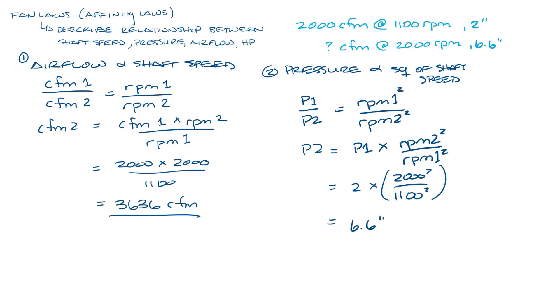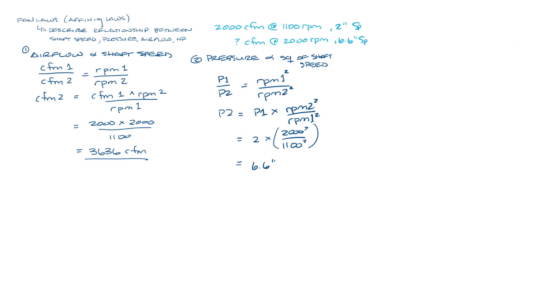So let's write this up here and then make a little more room again. The third law is that the horsepower varies by the cube of the shaft speed. So brake horsepower 1 divided by brake horsepower 2 equals RPM1 cubed divided by RPM2 cubed.